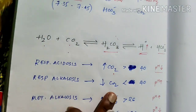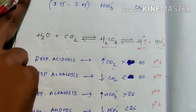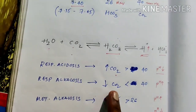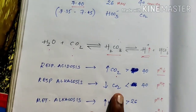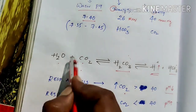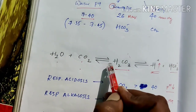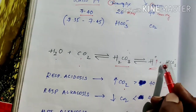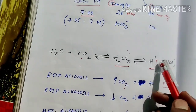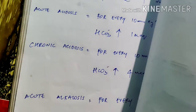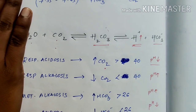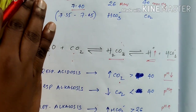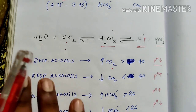In respiratory alkalosis, the lungs expire more CO2 than normal, so there is less CO2. Less CO2 means less H2CO3, and therefore less H plus. Less H plus means the fluid is less acidic — more alkaline — so pH increases.